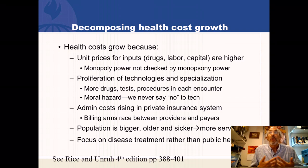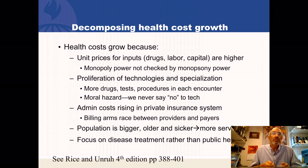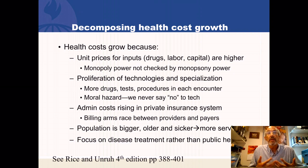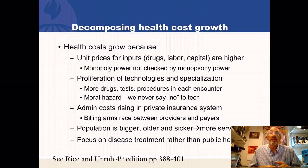Another factor is administrative loading charges — there's a billing arms race between providers and payers. On the provider side, there's an army of billers and coders trying to optimize every dollar of payment, so now we pay people simply to haggle over the health care bill. If your population got bigger, total spending grows, though we've already adjusted per capita. If your population is getting older or getting sicker, they'll get more utilization — and America is getting older and getting sicker.